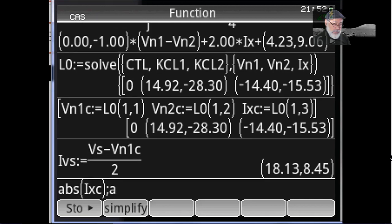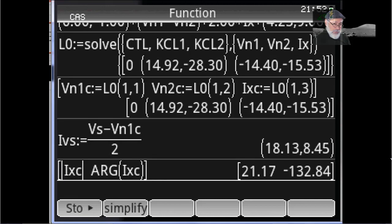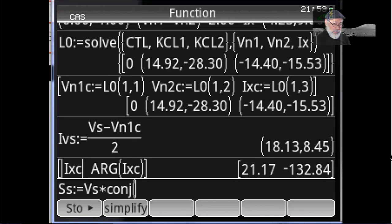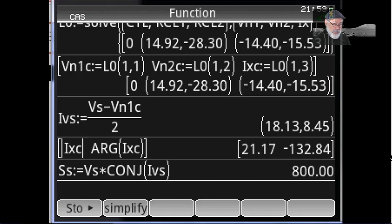And now I take what is the absolute value of the current Ix, and what is the angle, what is the phase. And that is 21.01 amps with negative 133 degrees. And the power in the source is the voltage Vs multiplied by the conjugate of the current. That is 800 watts. Oh, what about reactive power? No reactive power.